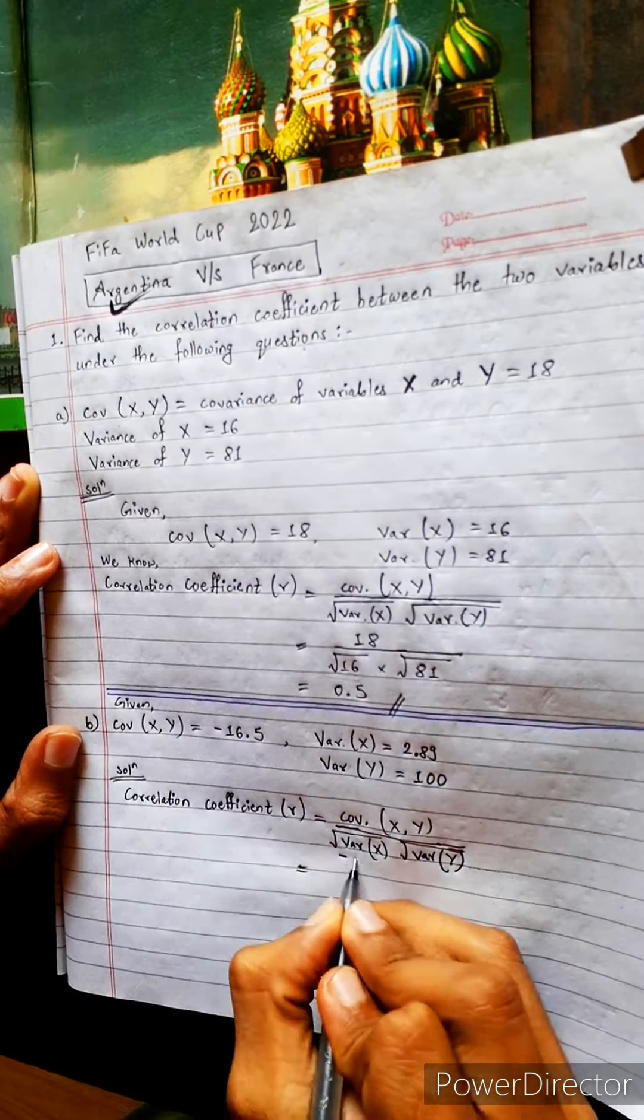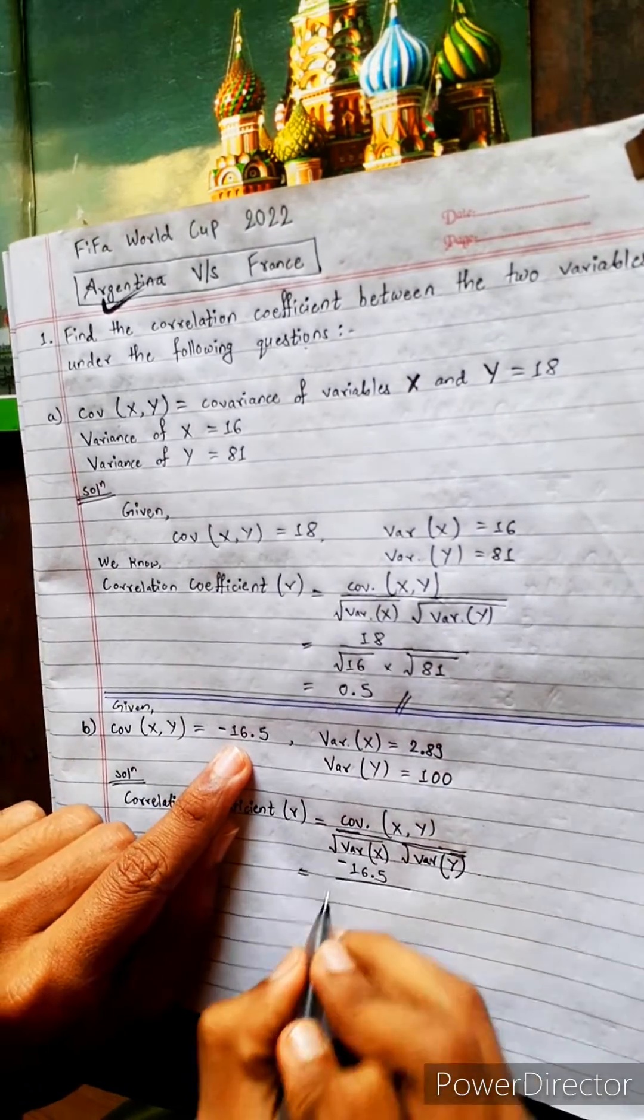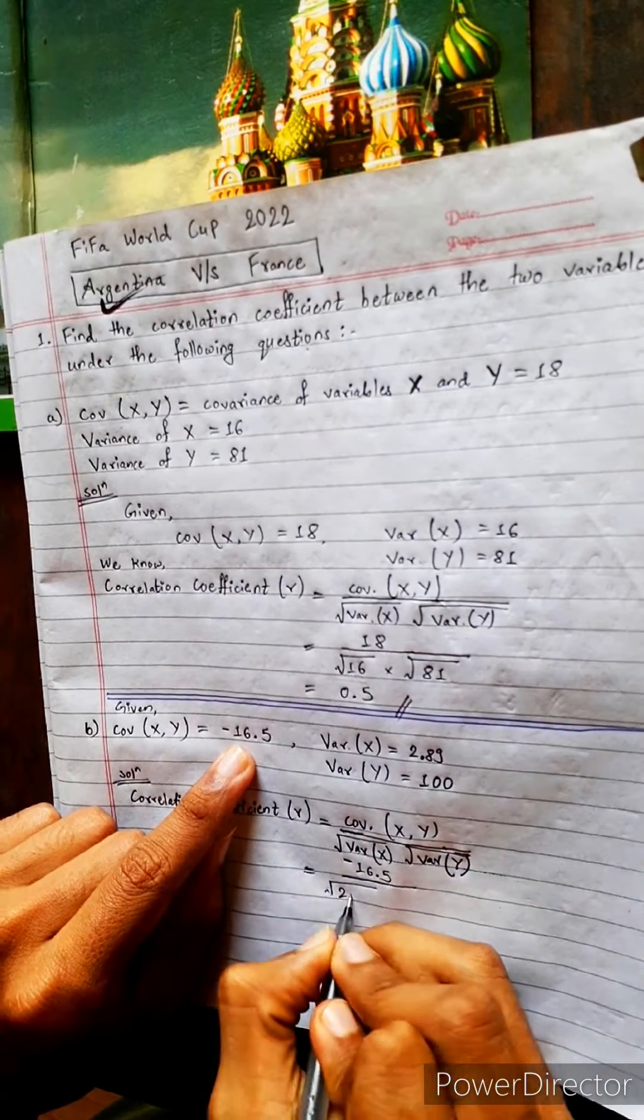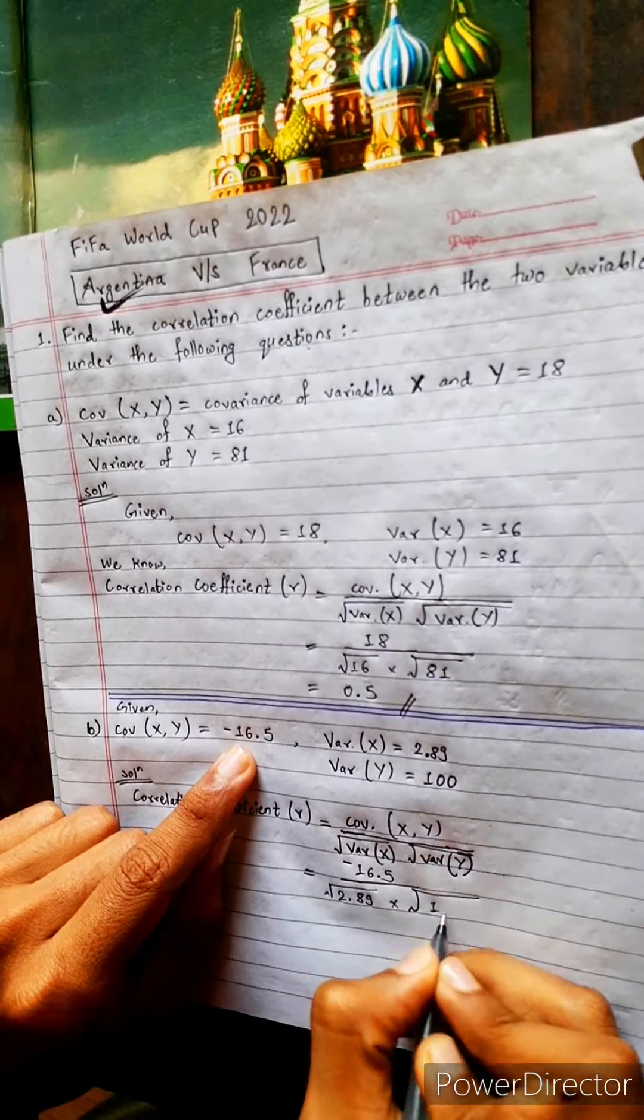COB is given as minus 16.5. Look from where I am writing. Under the root, X is 2.89, very less. And this is 100. Oh my god, 100.